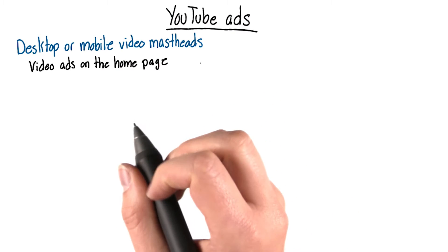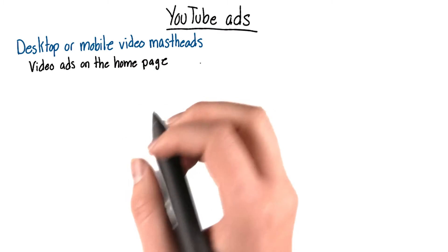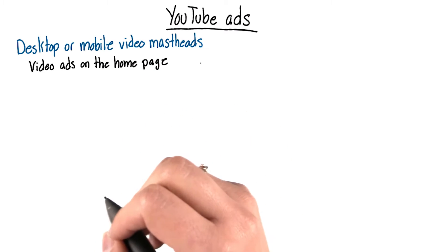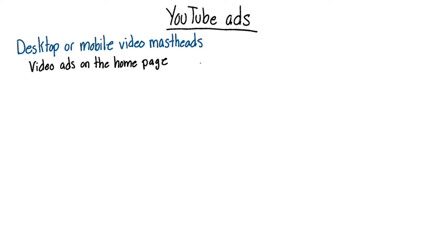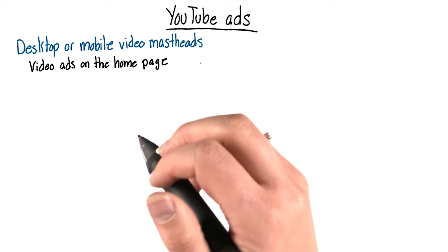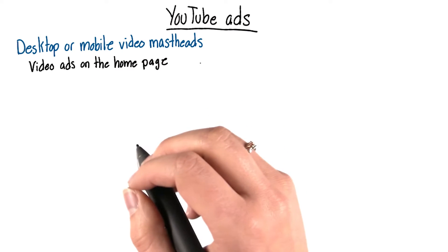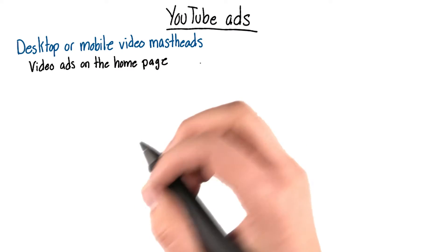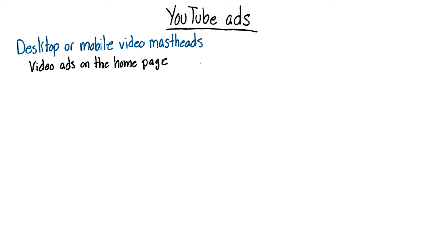One option is the desktop or mobile video mastheads. These are video ads that play on YouTube's homepage. On a desktop, they play without any sound, and it'll end as a thumbnail of your video or any other video from your channel. On mobile, the video thumbnails will be available for your users to click on. You can even add a link directly to your website.